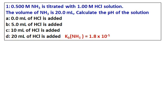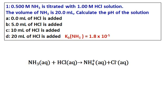I need to calculate the pH of the solution at different points of the titration, starting from 0 mL of HCl to 20 mL of HCl. Before we start, write down the neutralization equation: ammonia reacts with hydrochloric acid to give ammonium ions and Cl⁻. Let's go further and see how to calculate the pH at each stage.